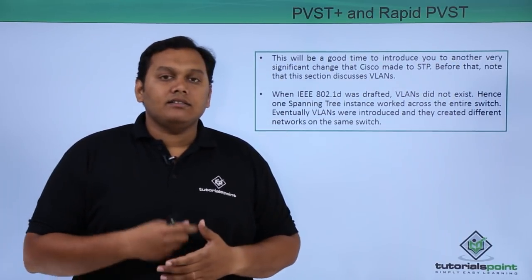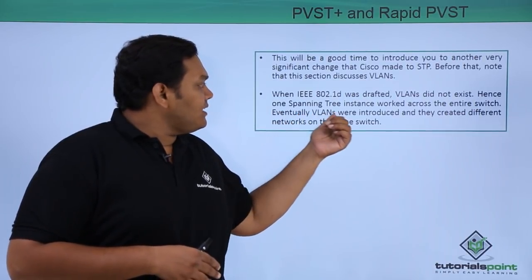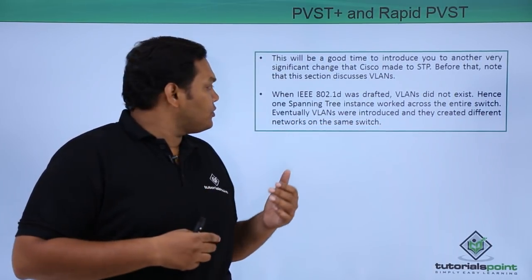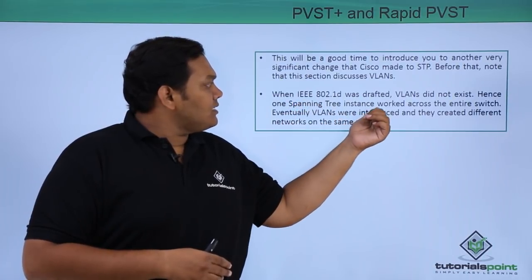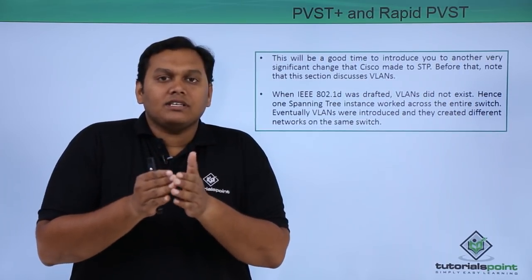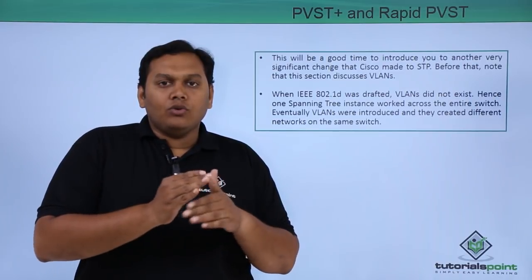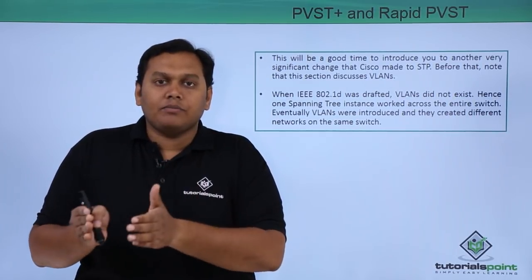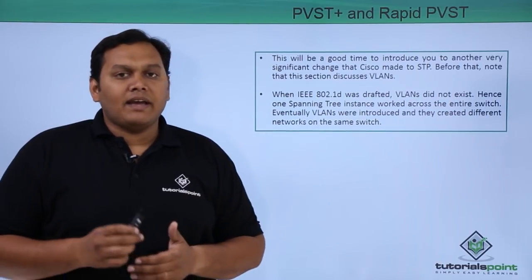When IEEE drafted and introduced 802.1d STP, VLANs did not exist. One spanning tree instance worked across the entire switch. Eventually VLANs were introduced, creating different network segments on the same switch. The original 802.1d STP model only worked on the entire switch, not on individual network segments. To enable STP on each network segment, Cisco introduced Per VLAN Spanning Tree.